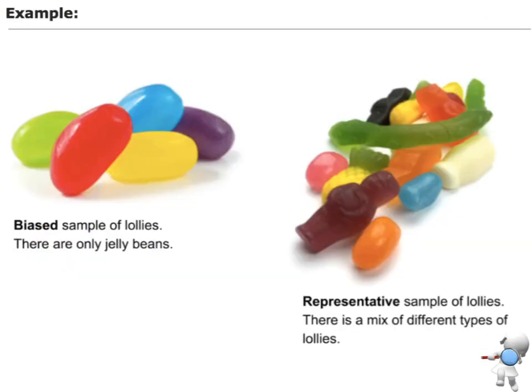I've got two sets of lollies. On the left-hand side, I've just got a set of jelly beans. This is a biased sample because it only contains jelly beans. It doesn't contain any other type of lolly, only one type.